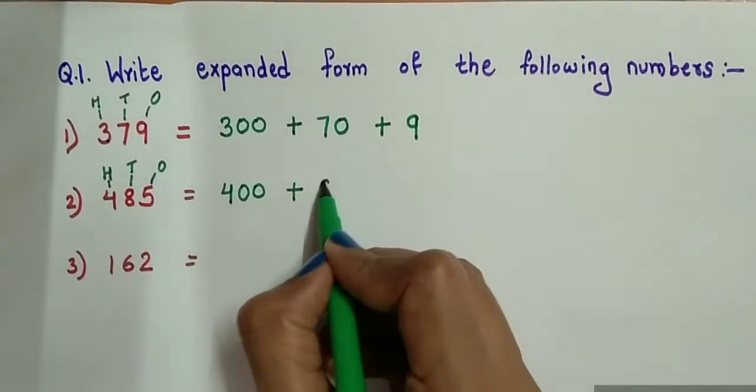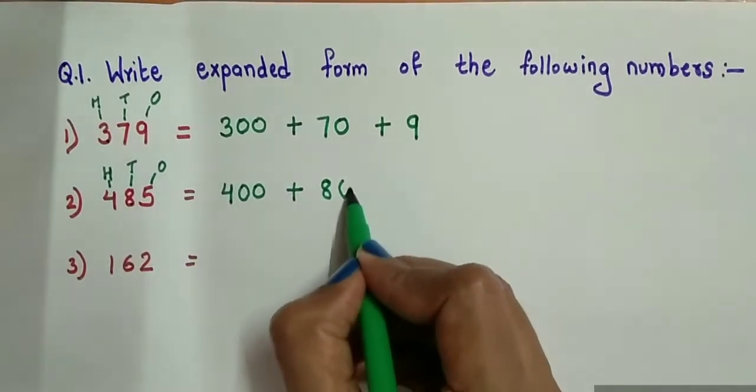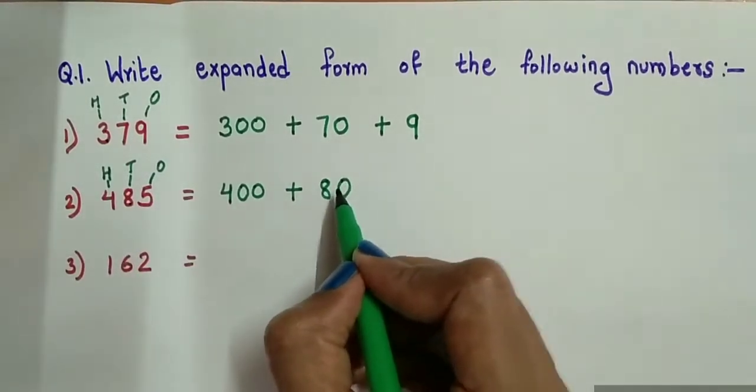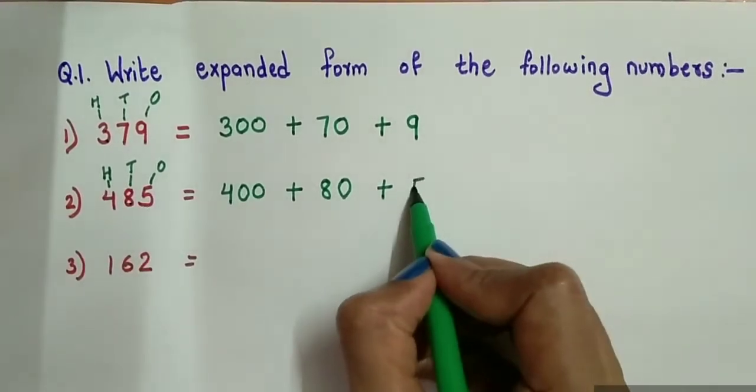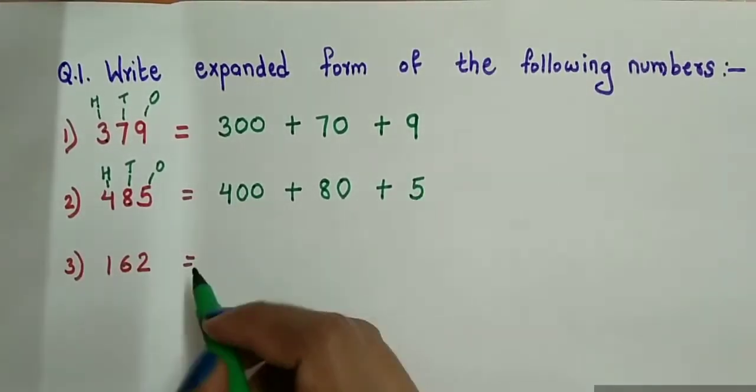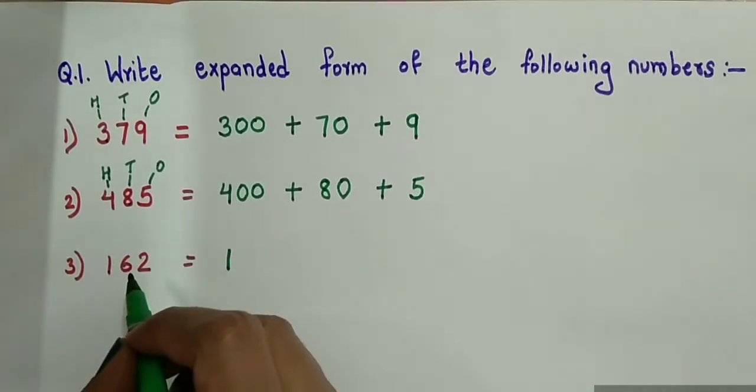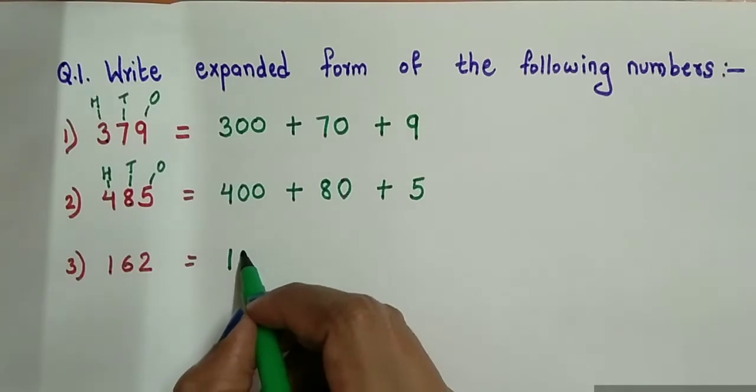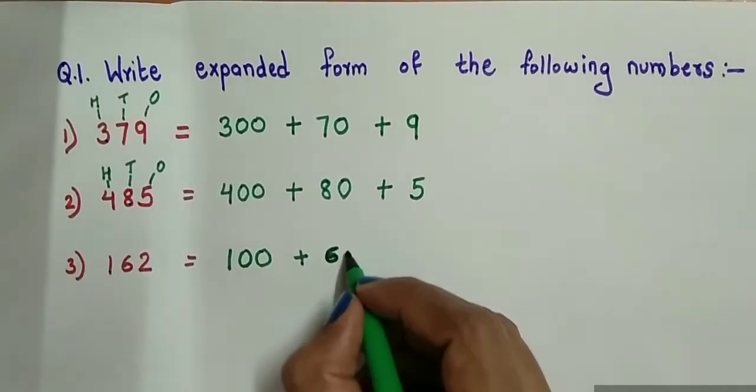Write 8 and add 1 zero since it is at 10's place. Again add plus sign and write 5. Similarly you can solve for 162: 1 and 2 zeros to it, 100 plus 6 and 1 zero for 10's place plus 2.